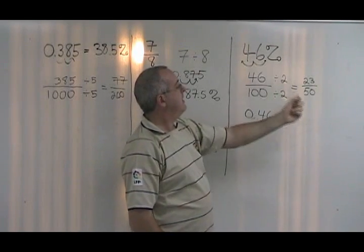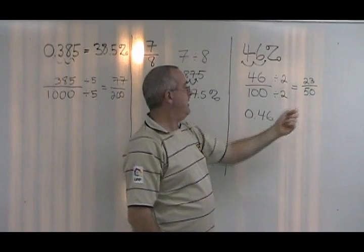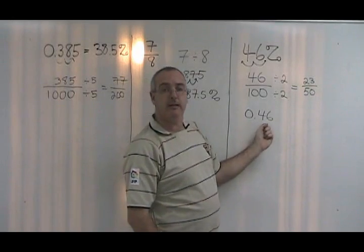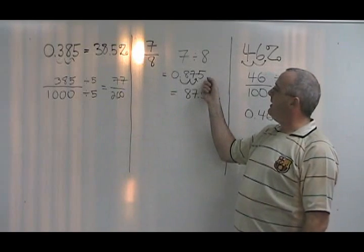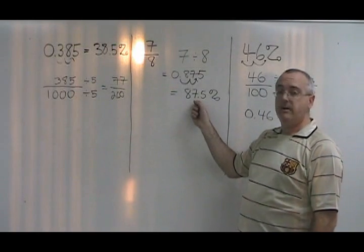46% is equal to 23 over 50, which is equal to 0.46. 7 eighths is equal to 0.875, which is equal to 87.5%.